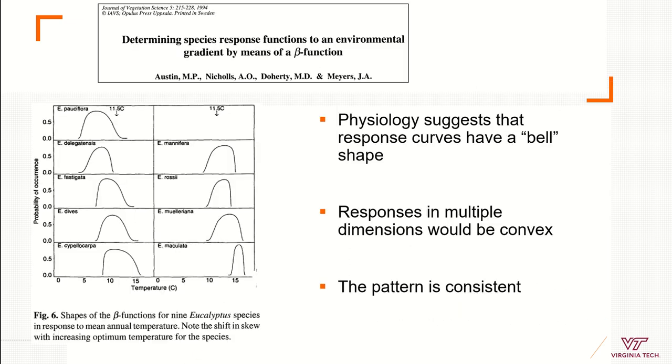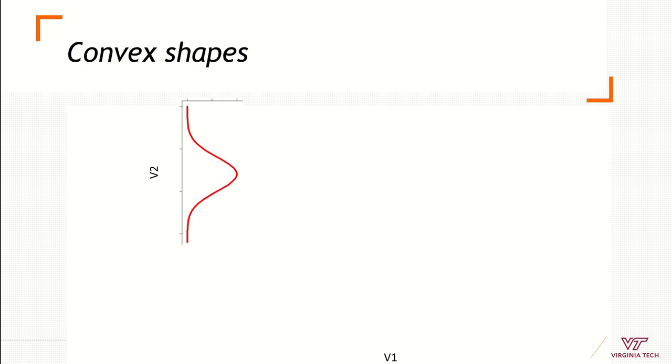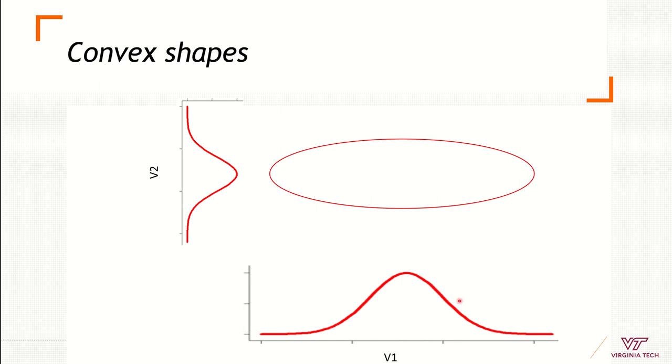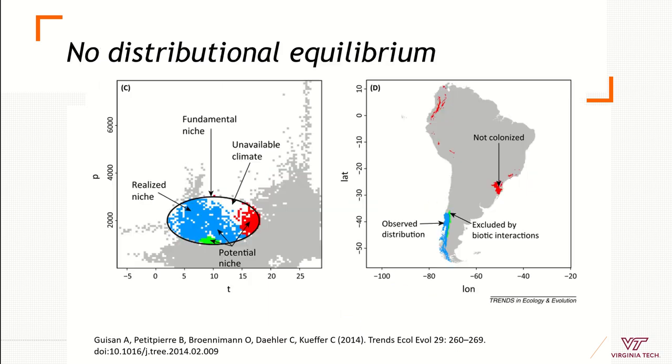Species response, for example to temperature, is in a Gaussian way like a normal curve. It doesn't matter the species, generally they have this response. Having that in mind, that they have this physiological response to variables—if we have one variable it's one normal curve, if we have several variables we have an ellipsoid. With that we need to keep in mind that we are trying to replicate an ellipsoid when we are modeling a fundamental ecological niche of species.